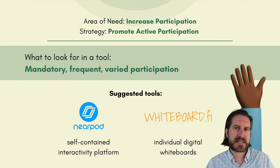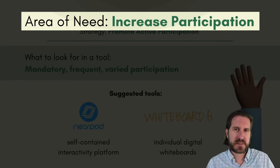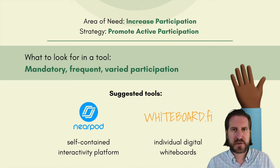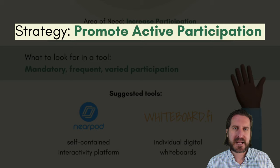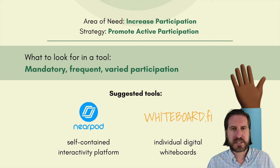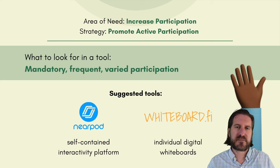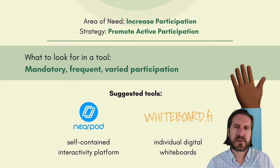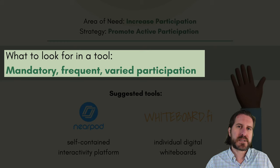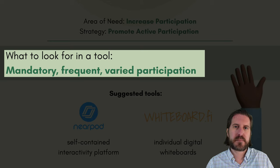Let's start with the first high impact area of need: to increase participation. For this area of need, we wanted to put an active participation strategy in place. After you've identified your strategy, the next step is to think about what you want out of a tool. In order to put an active participation strategy in place where students are doing things at all times in class, we're going to want a tool that helps us ask for mandatory participation as opposed to voluntary participation.